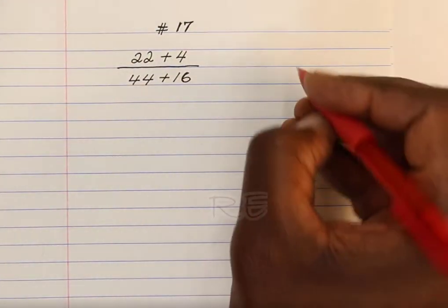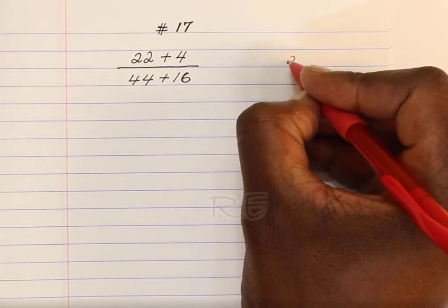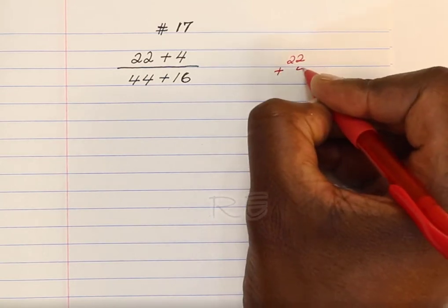In problem 17, the numerator and the denominator must be done separately.